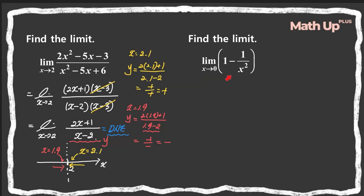Let's look at this limit. If we substitute 0 for x, our denominator is equal to 0. So we know that this function has a vertical asymptote at x equals 0. If we draw a number line, we have a vertical asymptote at x equals 0.